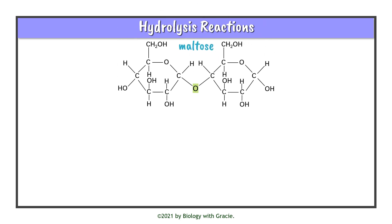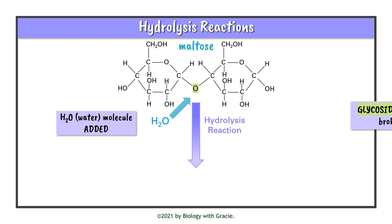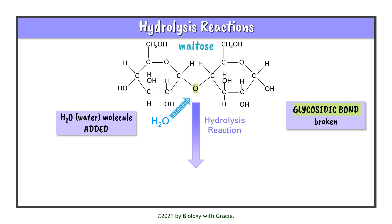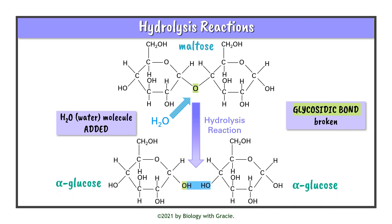Here we have our maltose disaccharide molecule. We add our water molecule back into the reaction in order for hydrolysis to take place. The glycosidic bond is broken, which produces our two alpha glucose monosaccharides — the same molecules we started with before the condensation reaction.